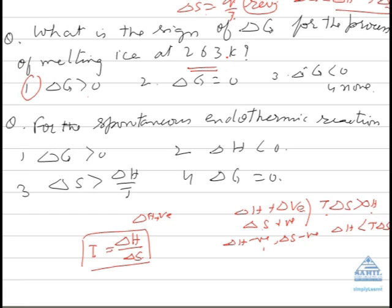So since the temperature is 263, it means the answer is first. If instead of 263, he writes 273, delta G will be zero. If he writes 275, means delta G will be negative.